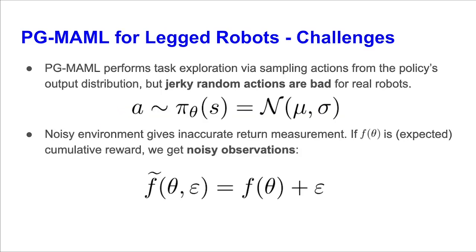However, for real-world legged robots, there are some challenges that need to be resolved first. One is that exploration is important for gradient estimation and fine-tuning. PG-MAML performs task exploration by sampling random actions from its stochastic action distribution, but this can lead to jerky actions, which are bad on real-world robots. The other is that the noisy environment can give inaccurate objective measurements. As seen here, if f of theta is the expected cumulative reward, we might have observed instead f tilde, which possesses an additional noise term epsilon.